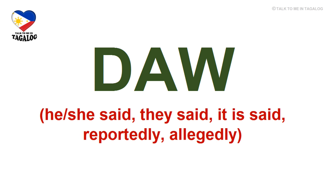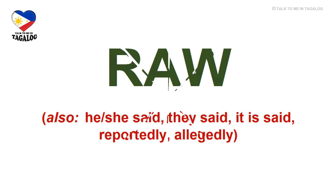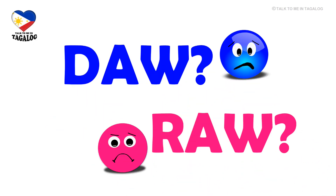So what do we mean by the word daw? Daw is the Tagalog equivalent of 'he said,' 'she said,' 'they said,' 'it is said,' 'reportedly,' or 'allegedly.' Raw is the variant of daw which has the same meaning. So now we know that daw and raw are the same — so when do we use daw and when do we use raw?